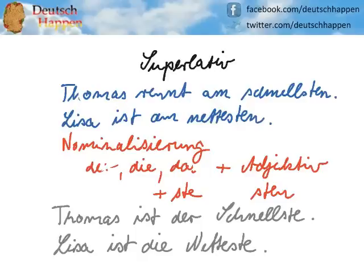Hi everyone, this is Kirsten and in today's Deutsch-Happen Lesson I would like to show you the superlative a little bit more in the sentence structure in German. Let's start right away with our first sentence: Thomas rennt am schnellsten — Thomas runs the fastest.